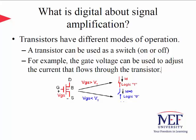The gate voltage can be used to adjust the current that flows through the transistor. Think of a transistor with three nodes named G, D, and S. The voltage between G and S, called VGS, can be used to control the current flow between nodes D and S. If VGS is greater than the threshold voltage V_T, then current flows and it implements logic 1. If VGS is less than the threshold voltage V_T, then there is no current flowing between nodes D and S, which implements logic 0.